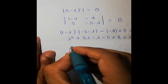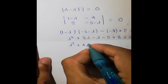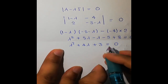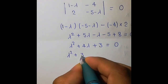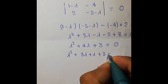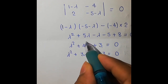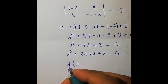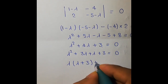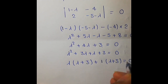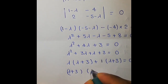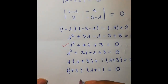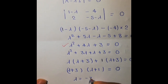Expanding gives λ² + 5λ - λ - 5 + 8 = 0, which simplifies to λ² + 4λ + 3 = 0. Factoring: (λ + 3)(λ + 1) = 0. Since this is a quadratic equation, we get two eigenvalues: λ = -3 and λ = -1.